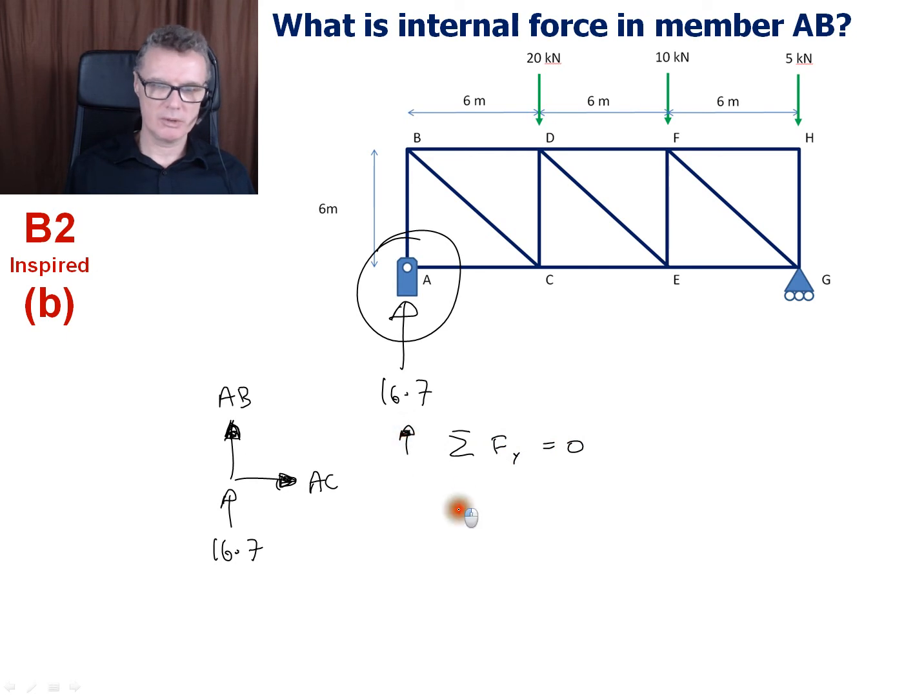You can say AB is going upwards, 16.7 is going upwards, equals zero. AB equals minus 16.7.